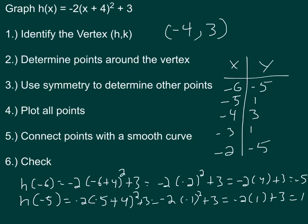That's pretty much how your table should look. I have the points (-6, -5), (-5, 1), (-4, 3), (-3, 1), and (-2, -5). I just found h(-6) and h(-5), and then used symmetry.